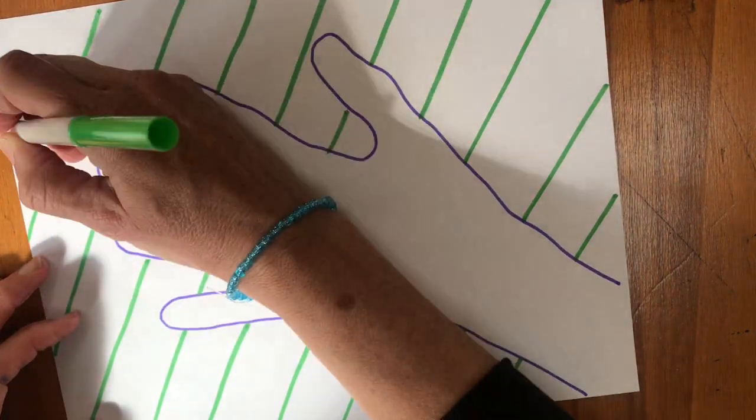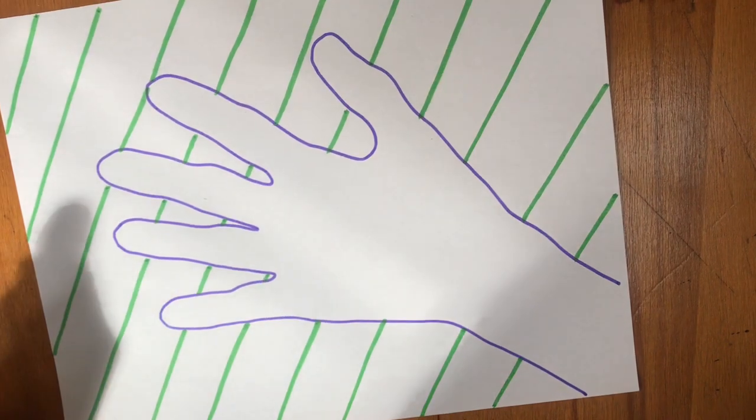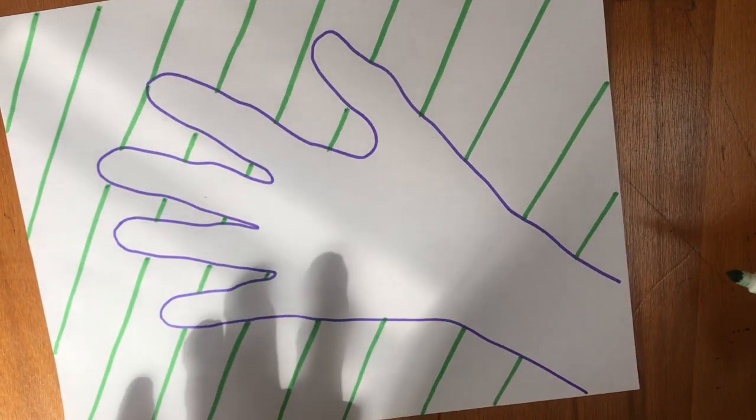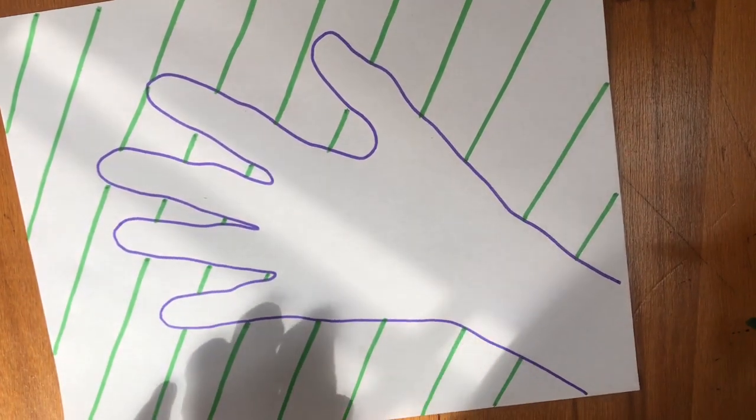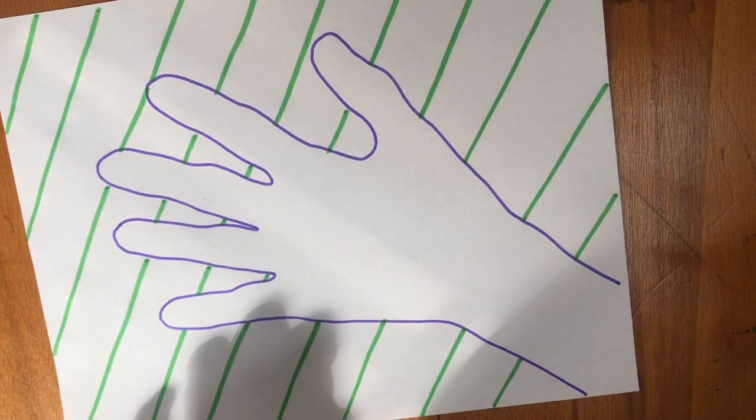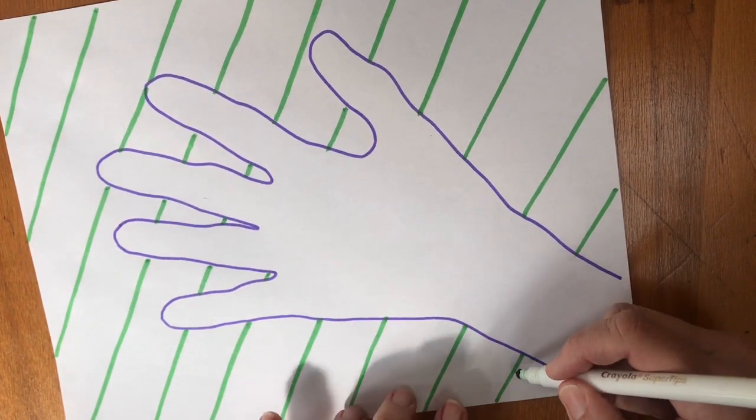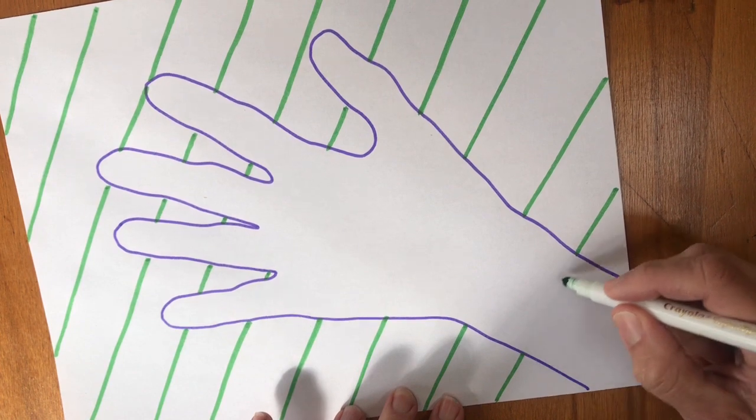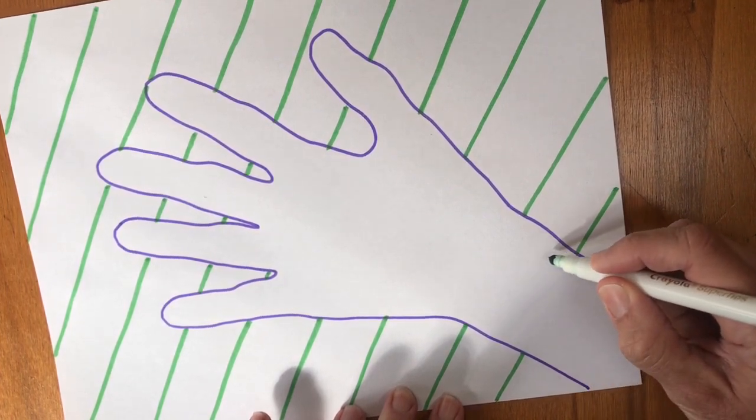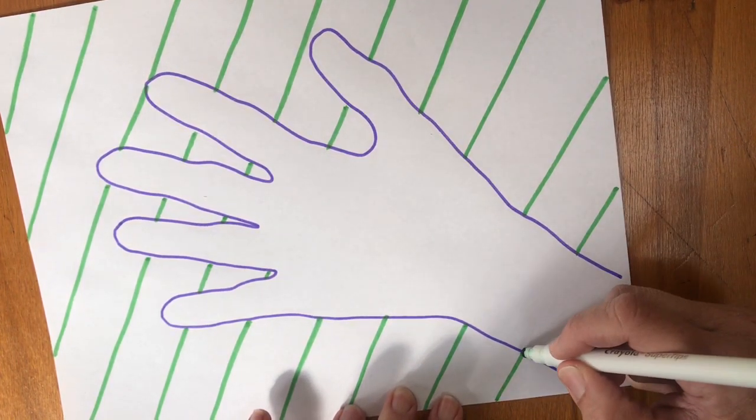And that's it with my green marker for now. Actually no, it's not. I'm going to start to now use my green marker and make the lines on my hands. Now when I make the lines on my hands, I'm not going to go straight. I'm going to make it so it has a curve to it, like a rainbow.